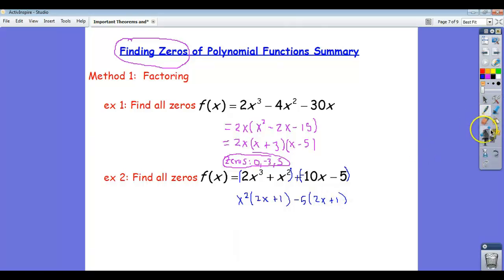This is good. This is good news. We want this to happen. We want these to be the same to do factoring by grouping. So that means this turns into x squared minus 5 times 2x plus 1. And now at this point we can get this.